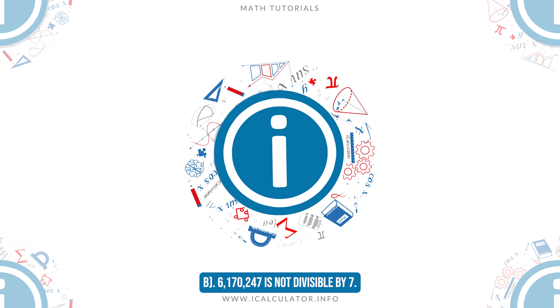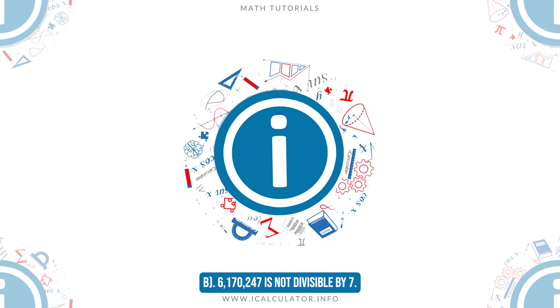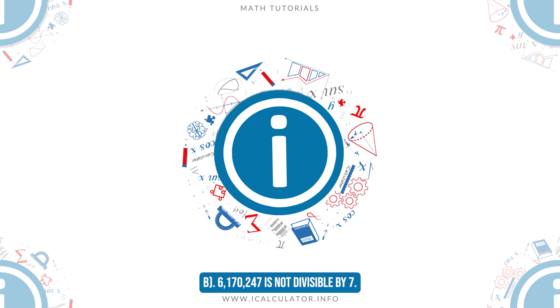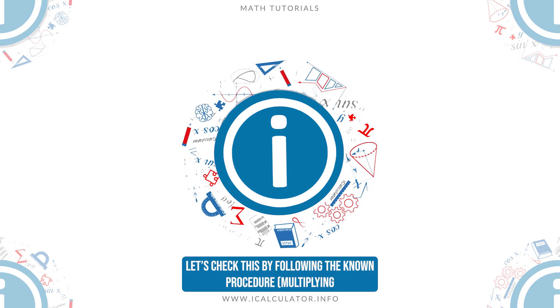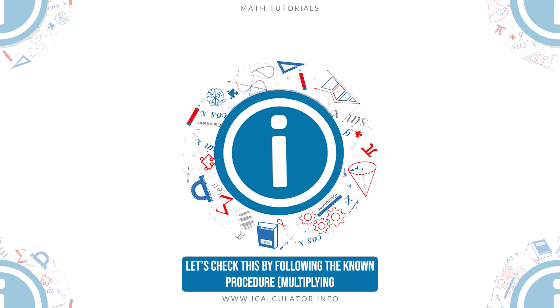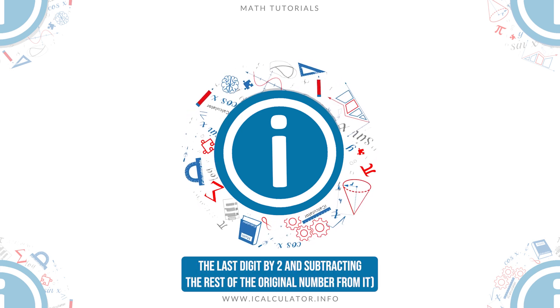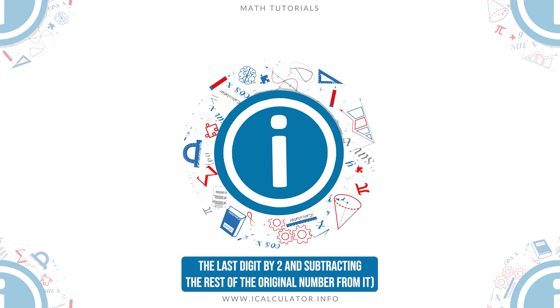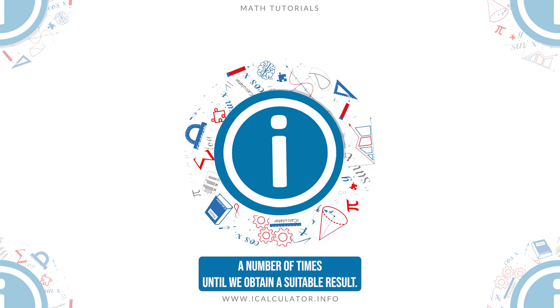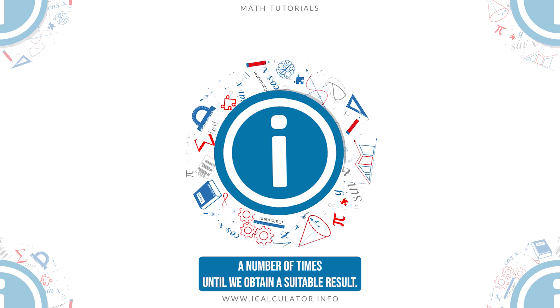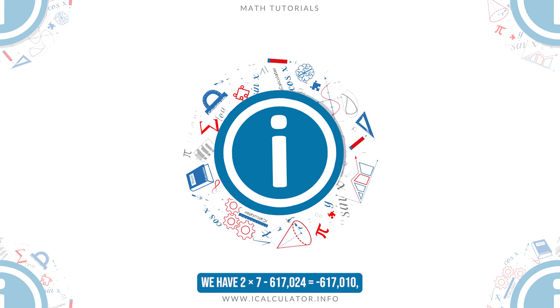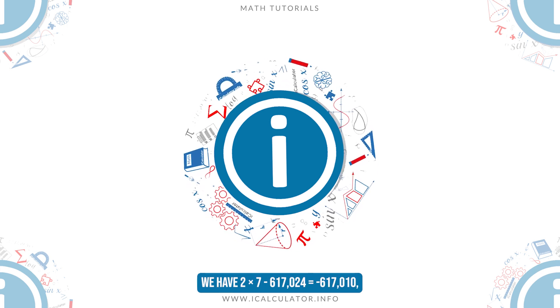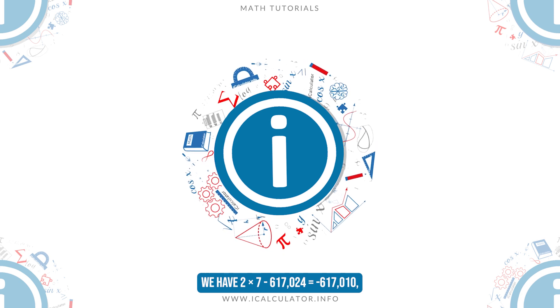B. 6,170,247 is not divisible by 7. Let's check this by following the known procedure, multiplying the last digit by 2 and subtracting the rest of the original number from it, a number of times until we obtain a suitable result. We have 2 times 7 minus 617,024 equals minus 617,010.